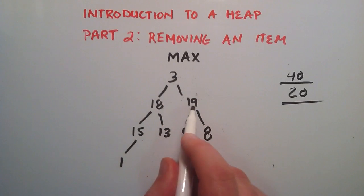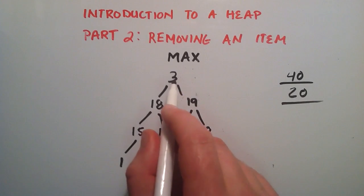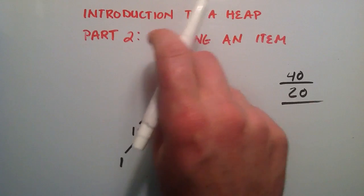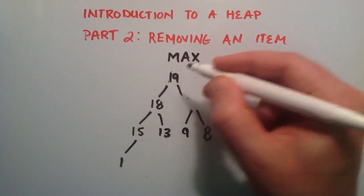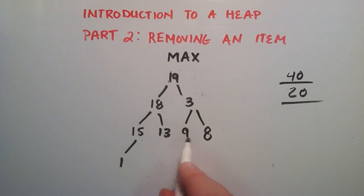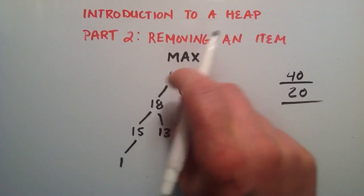We compare the two children. 19 is greater than 18, so then we check, is 19 bigger or less than 3? 19 is bigger, so it moves up top. And 3 moves down. And then we compare these two. 9 is bigger than 8, so then we compare the bigger number 9 with the value 3. 9 is bigger than 3, so we flip the two.